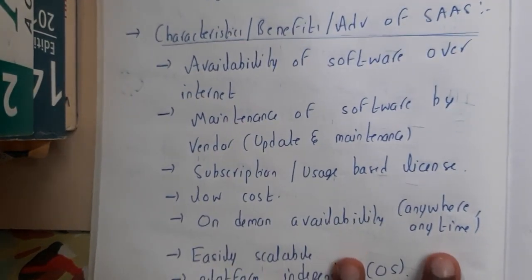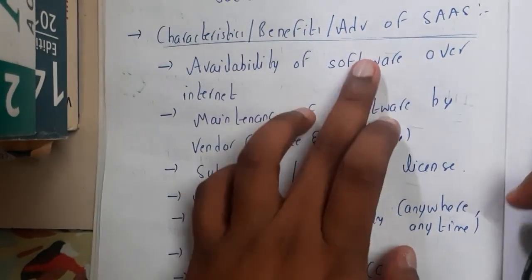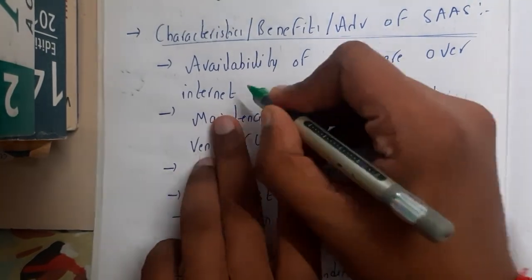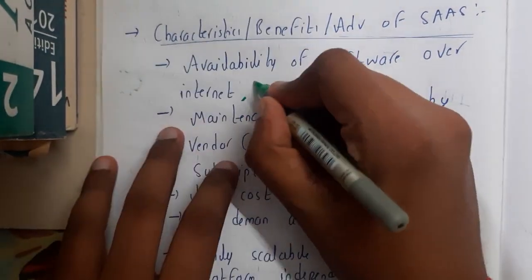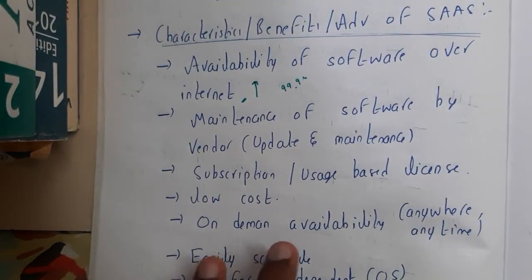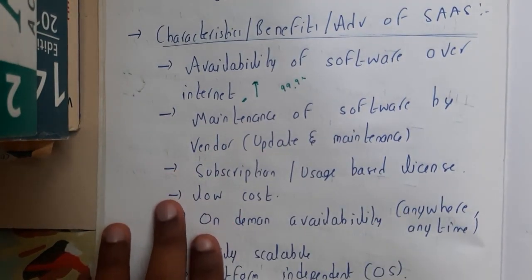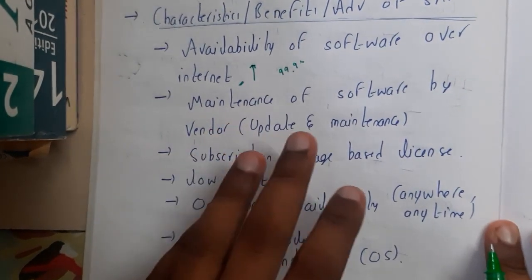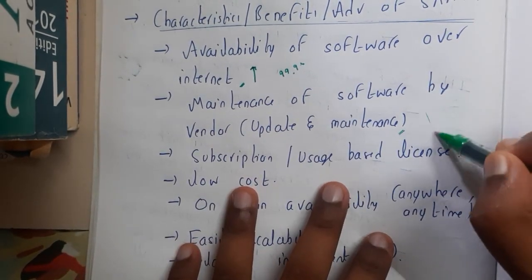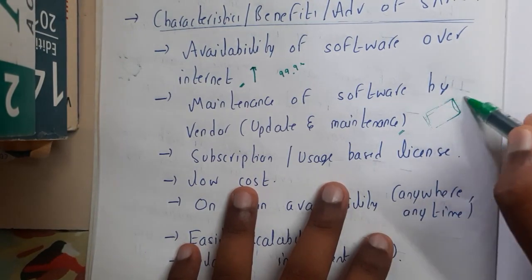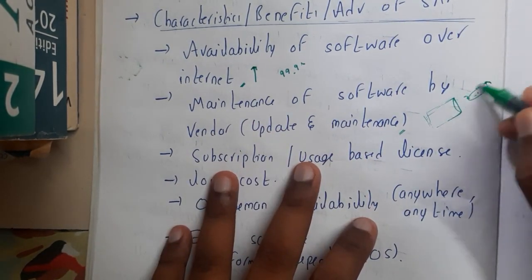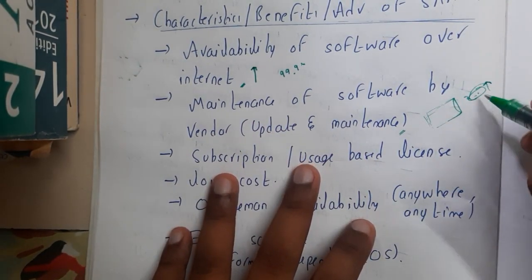Now let us go through some characteristics — also known as benefits or advantages, all three terms are the same. First, the availability of software over the internet is really high, because cloud service providers maintain 99.99% uptime. That is why the software will be available at any time. Also, maintenance and updates are taken care of directly by the vendor. For example, if you built a web app running PHP and an update comes, your vendor will take care of those updates — there is no need for you to update manually.